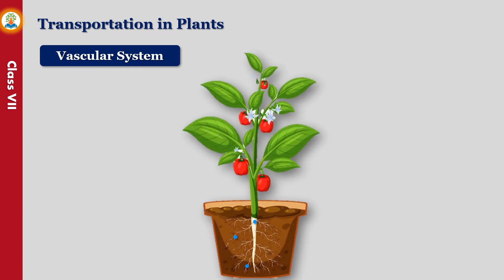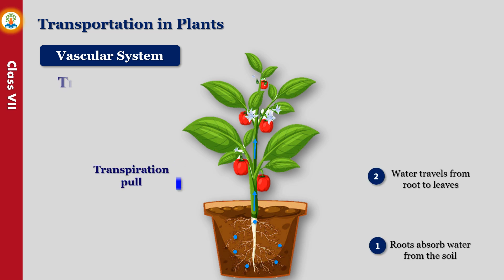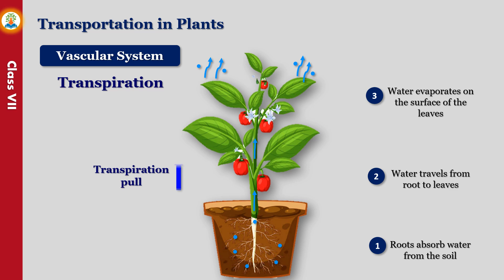Transpiration is the process by which plants lose water in the form of water vapor from their aerial parts, mainly leaves, through stomata. In order to compensate for the lost water, more water diffuses into the spongy tissue of the leaf from xylem vessels. The xylem functions as a straw through which water and dissolved minerals are drawn from roots to leaves.